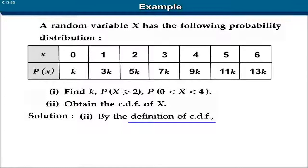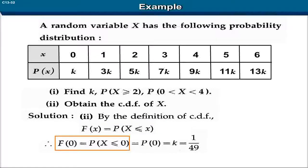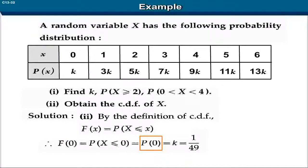By the definition of cumulative distribution function, F(x) is equal to P(X ≤ x). Therefore, F(0) is equal to P(X ≤ 0) is equal to P(0) is equal to k, which is equal to 1 upon 49.